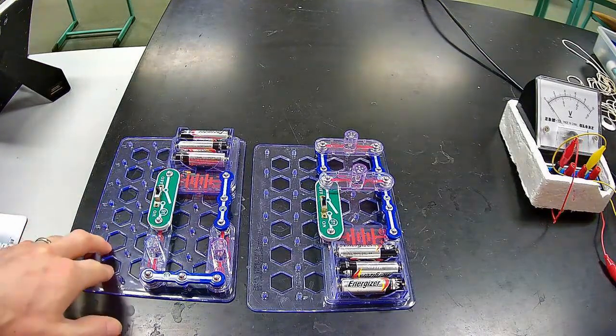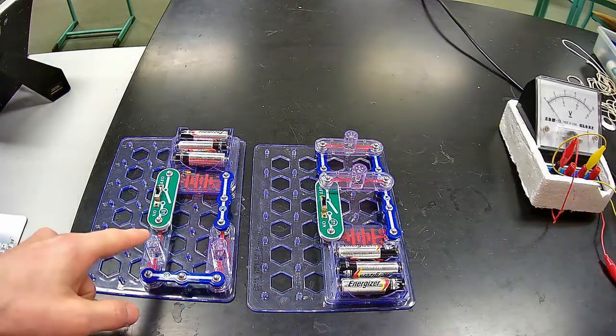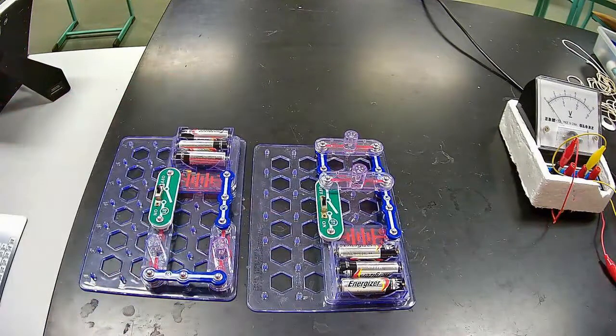So on our left we have a series circuit, on our right we have a parallel circuit. We have two resistors or two light bulbs in this case for each of the circuits.